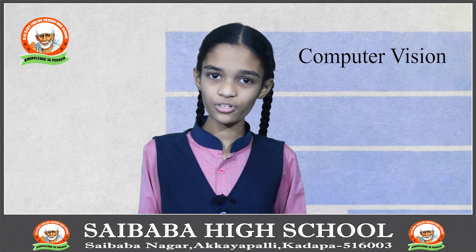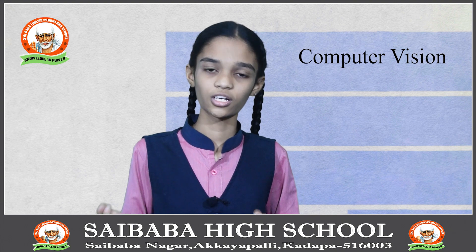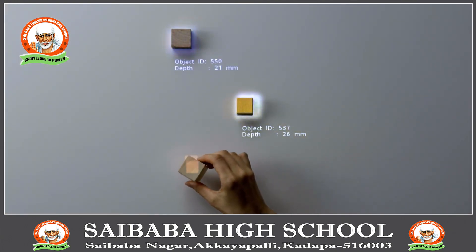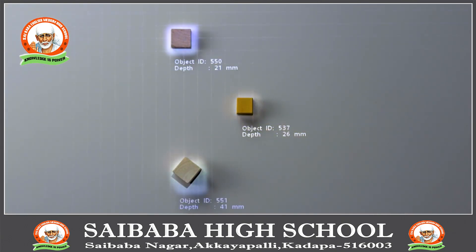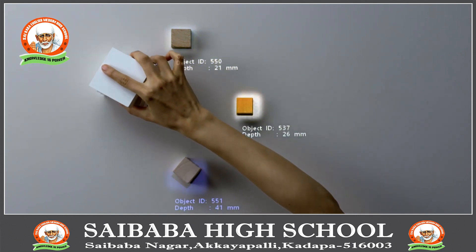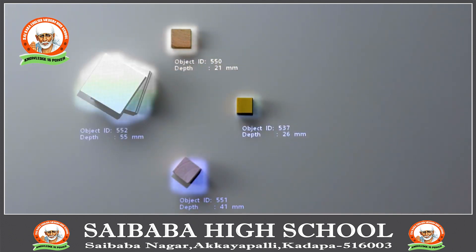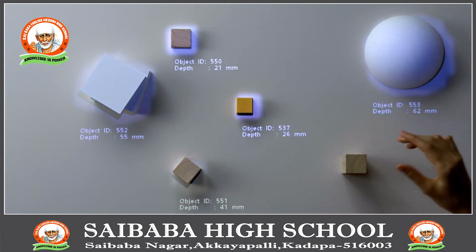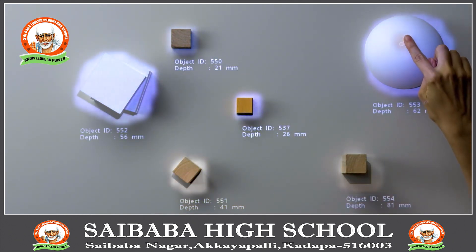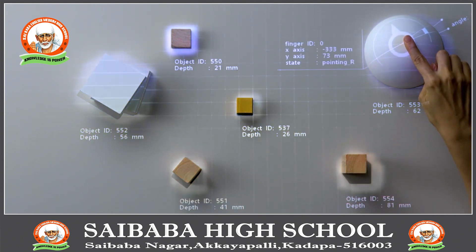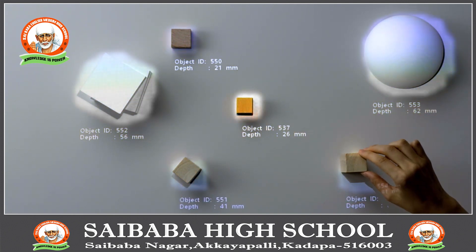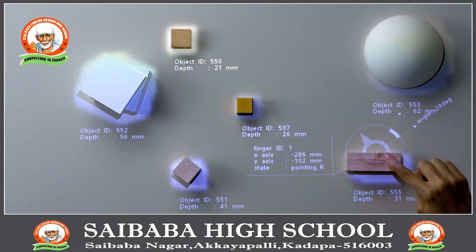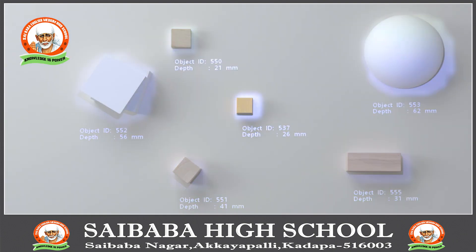Let us know what is Computer Vision? Computer Vision algorithms try to understand an image by breaking it down and studying the different parts of the objects. This helps the machine to classify and learn from a set of images to produce the desired output.